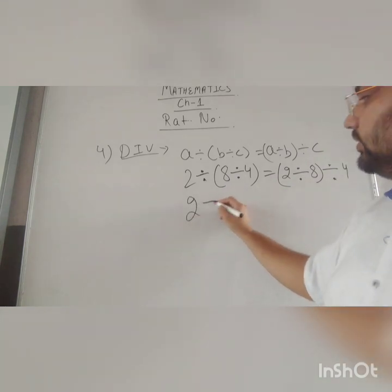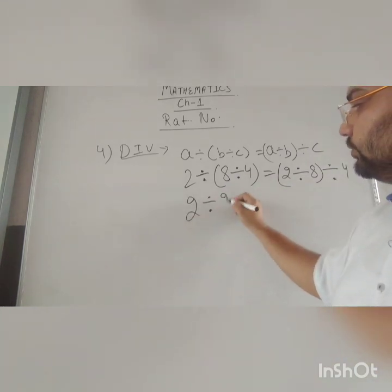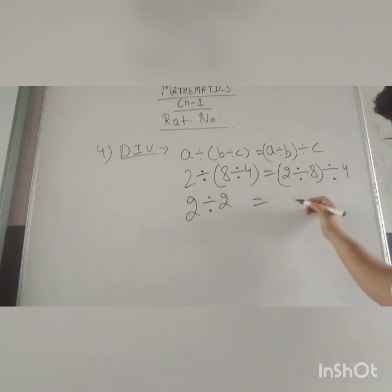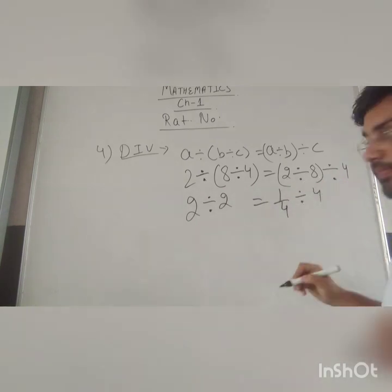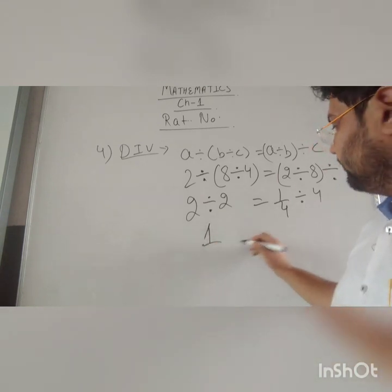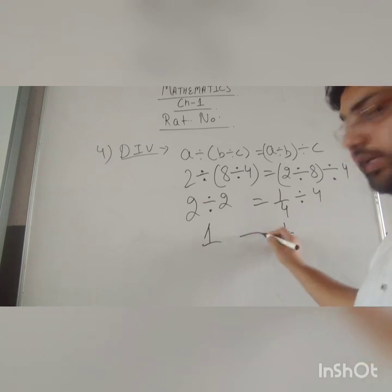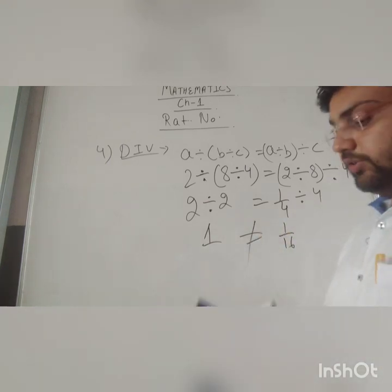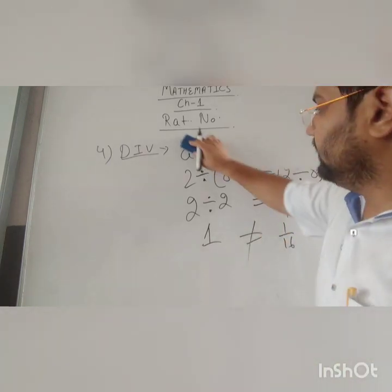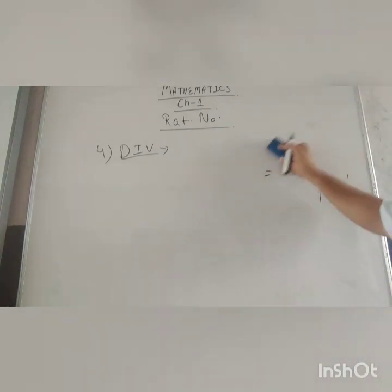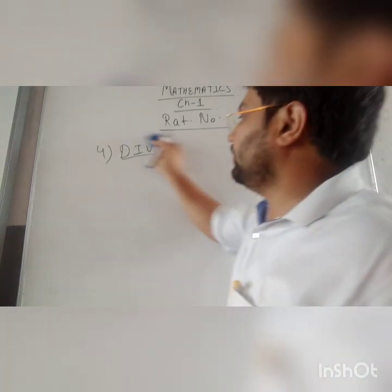What is 2 divide 8 by 4? 8 by 4 is 2, so 2 by 2 is 1. And 2 by 8 is 1 by 4, divided by 4 is 1 by 16. These are not equal. So in the case of division, this property does not hold.